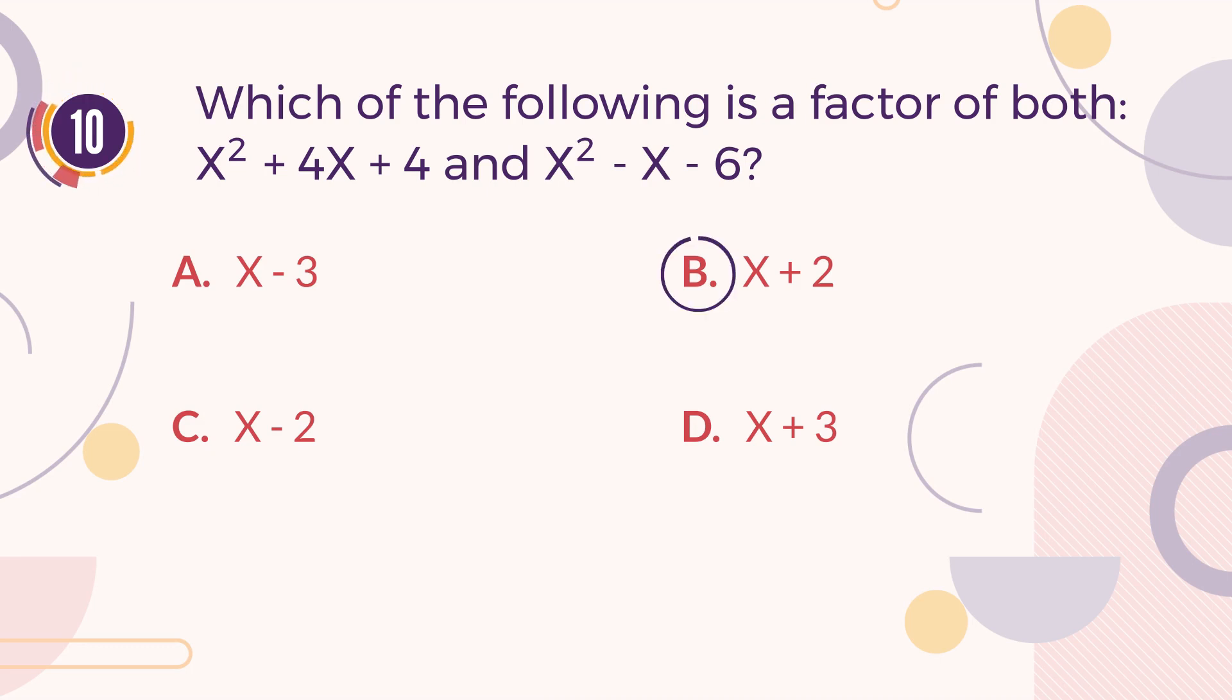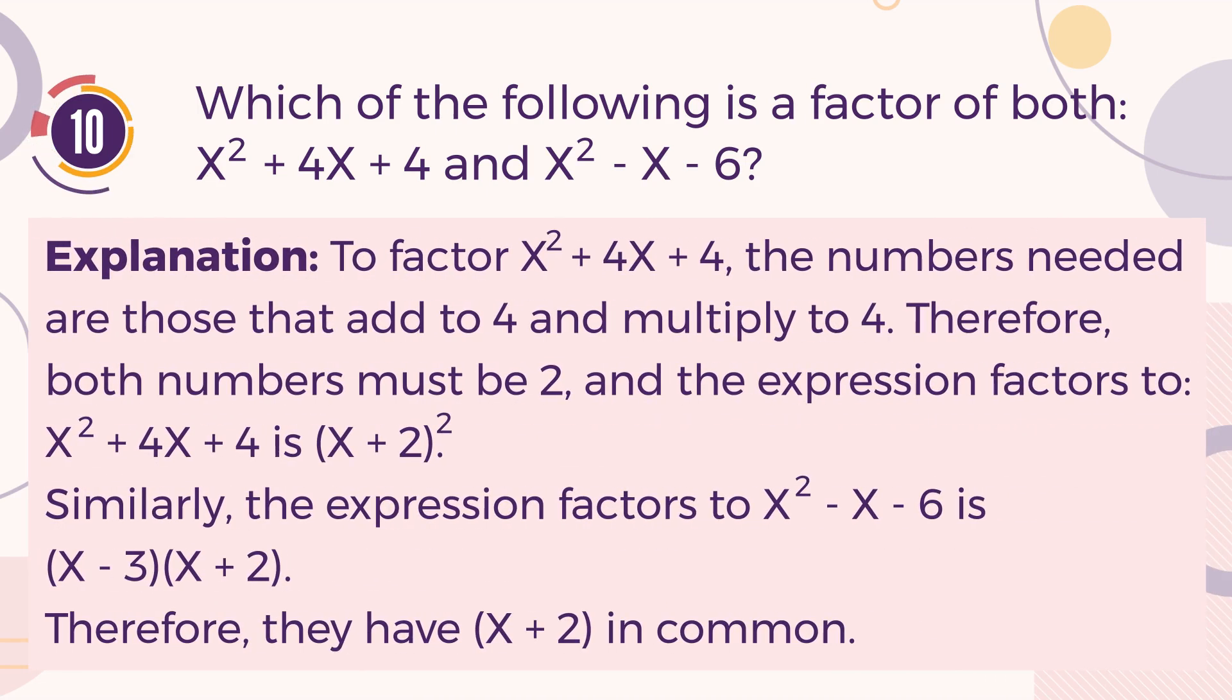The correct answer is B. X plus 2. Explanation. To factor X squared plus 4 times X plus 4, the numbers needed are those that add to 4 and multiply to 4. Therefore, both numbers must be 2, and the expression factors to the square of X plus 2. Similarly, the expression X squared minus X minus 6 factors to X minus 3 multiplied by X plus 2. Therefore, they have X plus 2 in common.